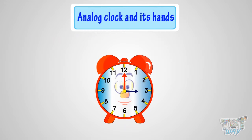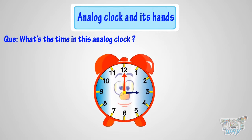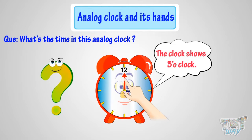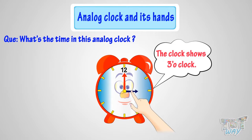Can you tell me what's the time in this analog clock? Let me help you do that. The clock shows 3 o'clock. When the minute hand is at 12, it is time to the hour. But to which hour? The hour hand tells the hour. As the hour hand is pointing at 3, it's 3 o'clock.